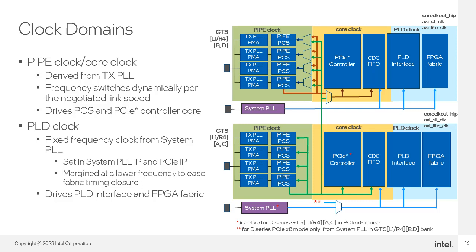The third clock domain is the PLD clock. This clock frequency is fixed; it is set by configuring both the PCIe IP core and the system PLL IP core, which we will learn about later. This clock feeds into the FPGA fabric to facilitate transfers between the transceiver and the FPGA logic. Note that some parts of the PCIe IP are implemented in the FPGA fabric, running off of the PLD clock. The only difference between D and E-series devices in this diagram is the green vertical wire between the blocks, which exists in D-series devices but is not found in E-series.